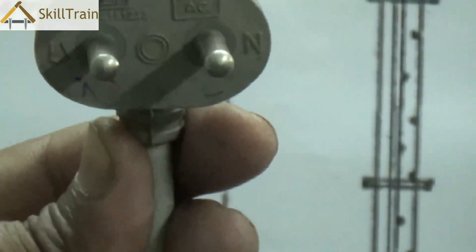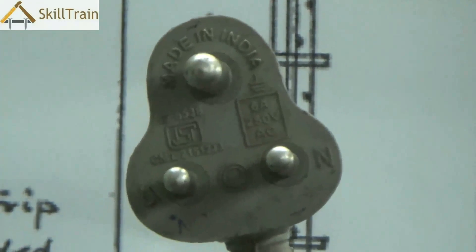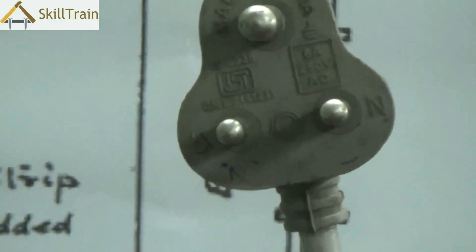They normally have three pins here. One is for the neutral, one is for the line or the phase and the third one is essentially for the earthing. So the one that you see on top, the big pin is essentially for the earthing.